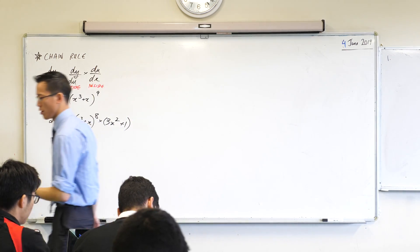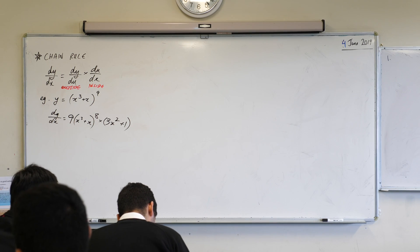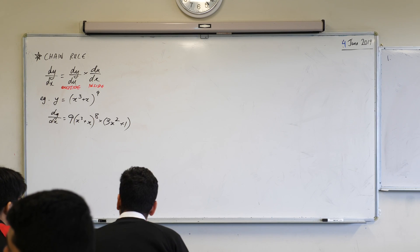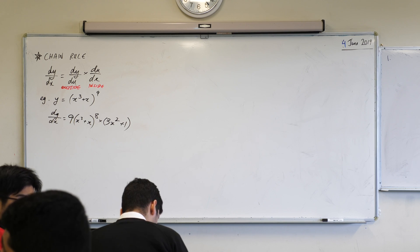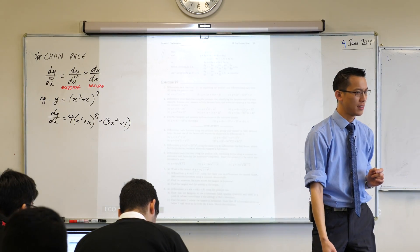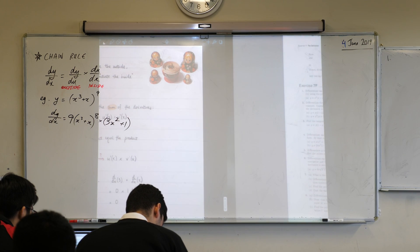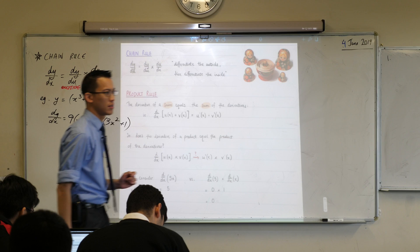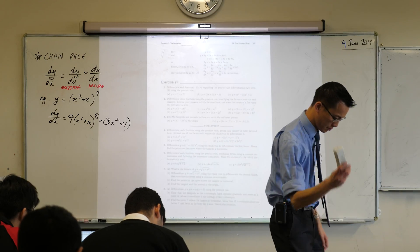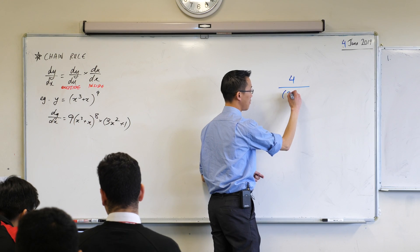You can come back to 7D later for homework. So we're going to have a look at 7E — is that where you're looking right now? A student asks about the answer to a question — 4 over (3s + 2)³. Thank you.